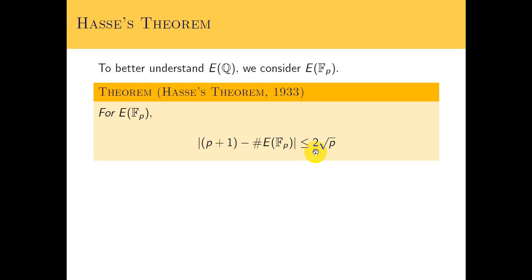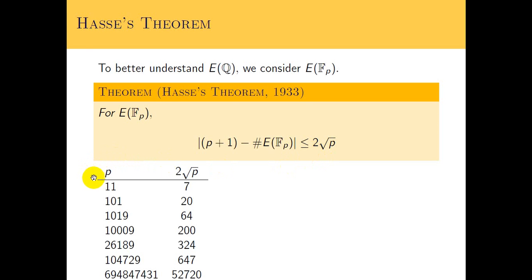In general, we would expect this to be close to this: the size of E(F_p) is close to p plus 1, and it's close by this sort of ratio. You might not be sure about how good this estimate is, so I made a little table for a bunch of different primes. You can see that when the prime is small, like 11, by comparison the factor 2 root p is pretty close to p. But as we get p's really large, like a nine-digit prime here, the 2 root p is only a five-digit number. So this estimate gets better and better the bigger the primes get.